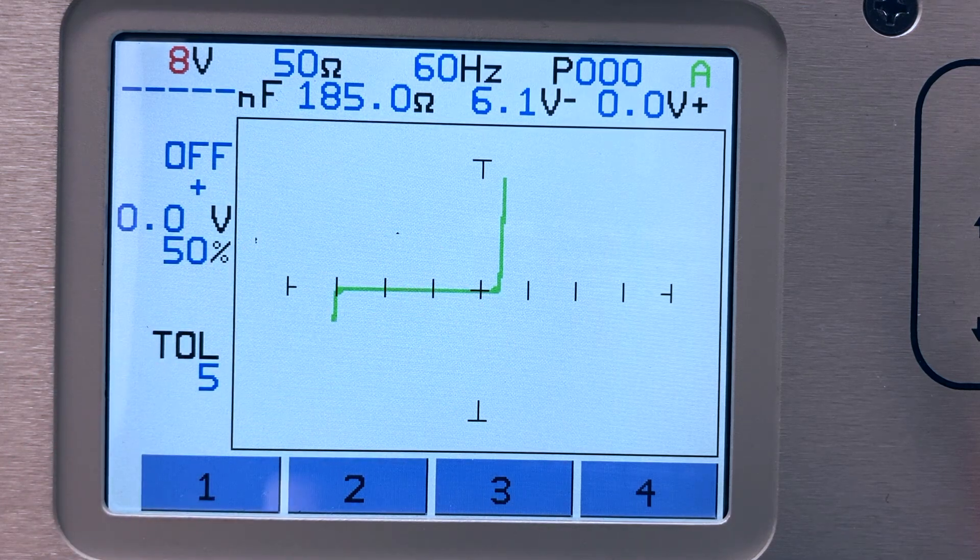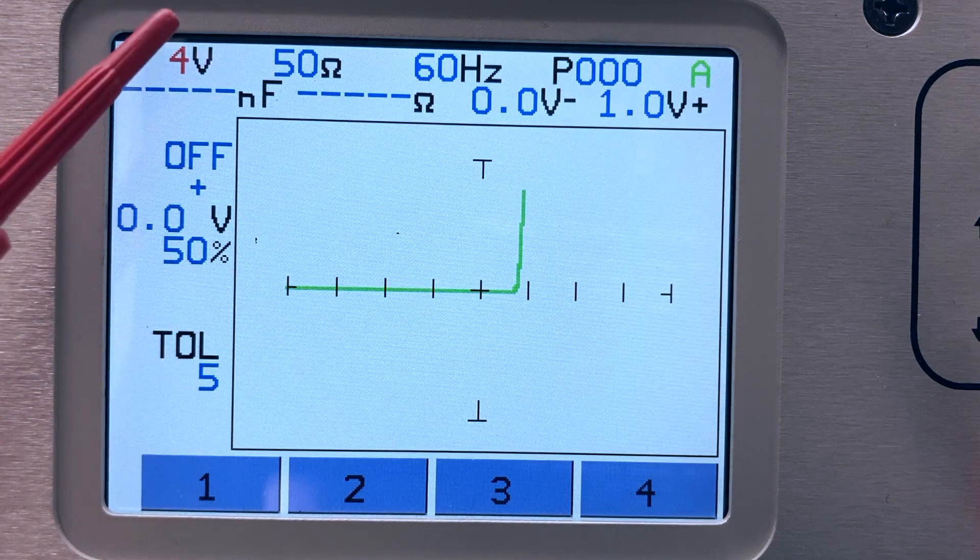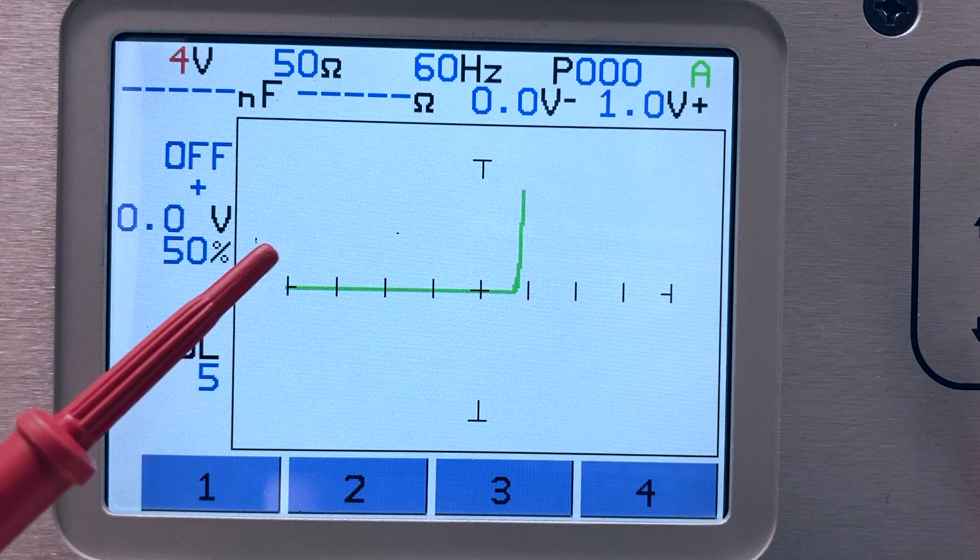Of course, the tracker voltage needs to be set high enough to show the reverse breakdown voltage. Here is the same Zener diode with the tracker set to 4 volts.